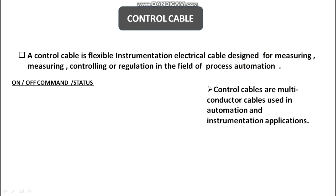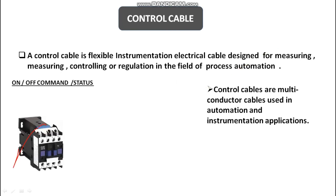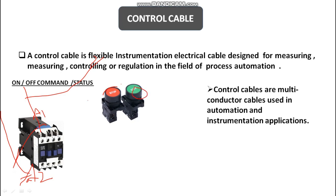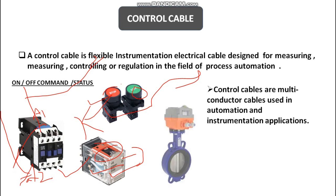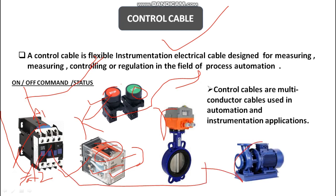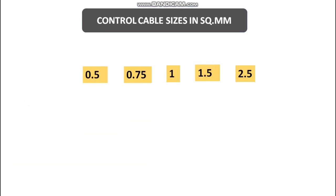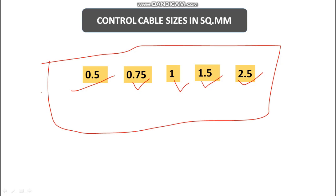As you can see, a contactor has coil terminals A1 and A2 — these are the control terminals where we use control cable. Similarly, push buttons are parts of the control system and also use control cable. Relays can operate through control cables to activate and deactivate, to switch on automated devices and actuators, and to switch motors on and off. For control cable sizes, they come in 0.5, 0.75, 1, 1.5, and even 2.5 square mm.